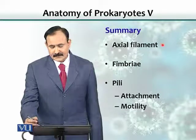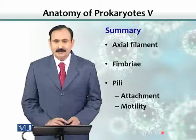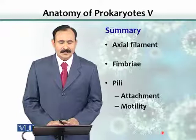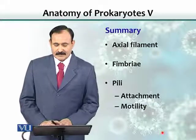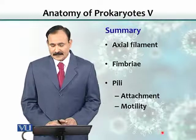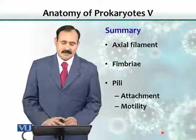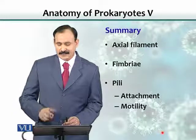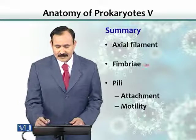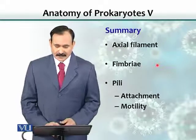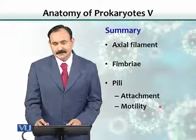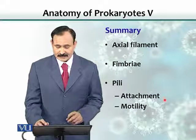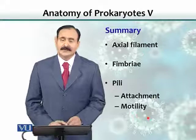In summary, the axial filament is used by some bacteria like spirochetes. The motility produced by the axial filament is not very fast — it is a twisting kind of motility. Fimbriae are used for attachment to surfaces. Pili serve two purposes: attachment to another bacterium and motility through gliding.